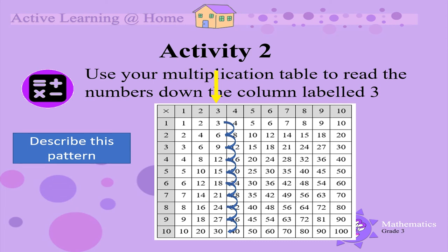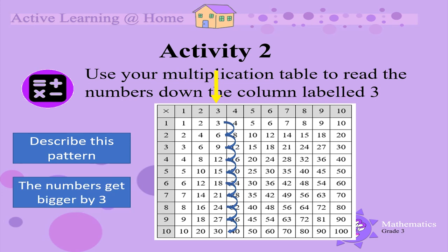Do you see that the pattern formed in the column labelled 3 and the row labelled 3 is exactly the same? Choose another number. Read the numbers along the row of that number you have chosen. Describe this pattern. Then read the numbers down the column of the same number. Describe this pattern. Practice doing this with a few different numbers.